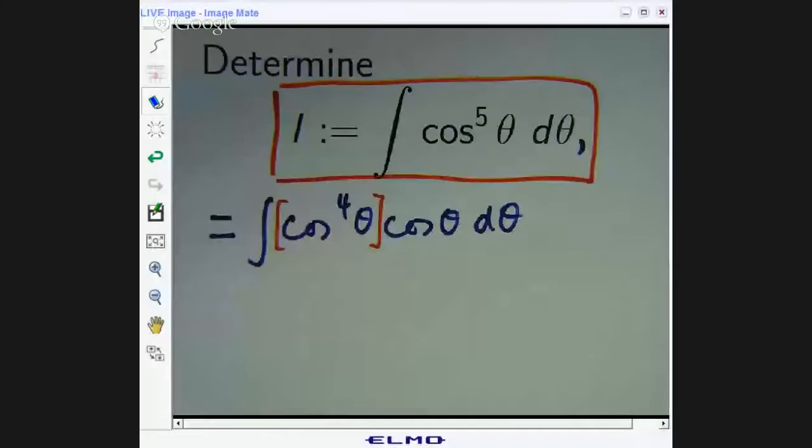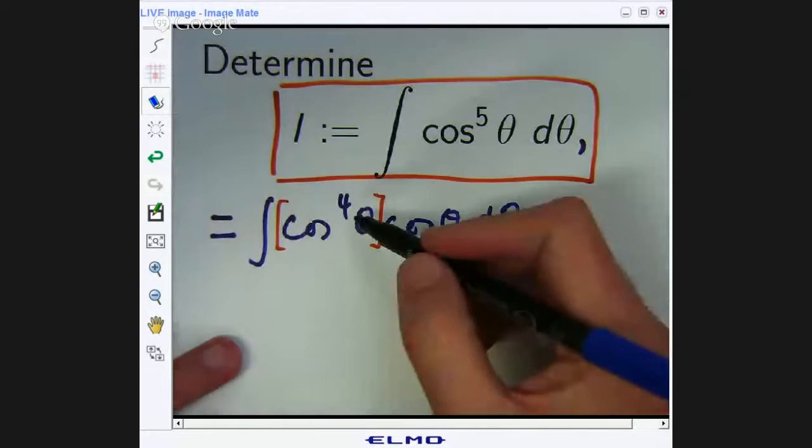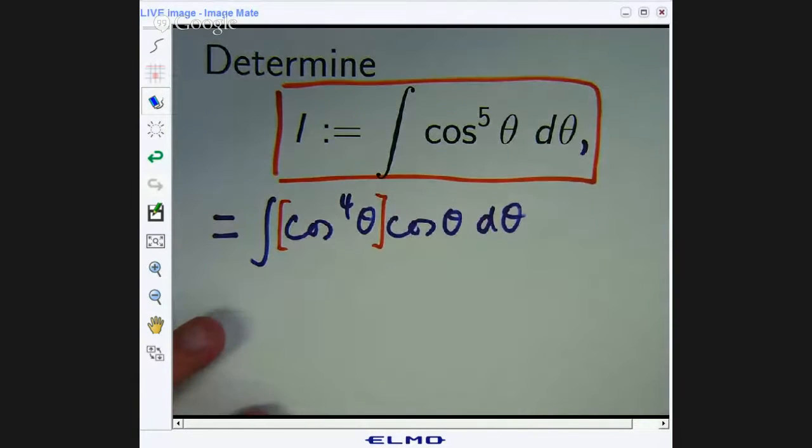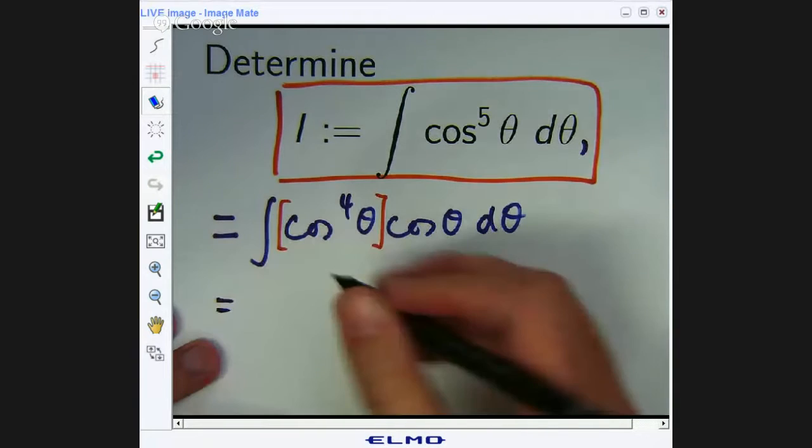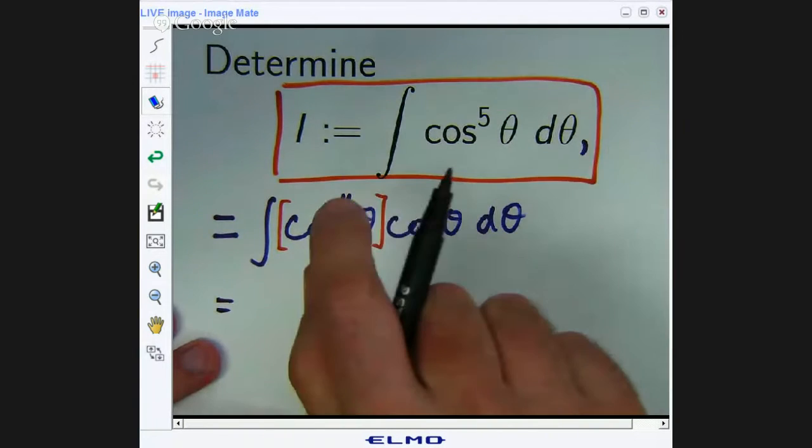I'm going to change this square bracketed part to something involving a power of sine. Well, how can I do that? Well, I can use cos squared plus sine squared equals one. And more importantly, why would I want to do that? We'll see why you want to do that at the end when it will work out really nicely. And I'll give you a general idea of what's going on. I know that sine squared plus cos squared equals one, so this is cos squared all squared.